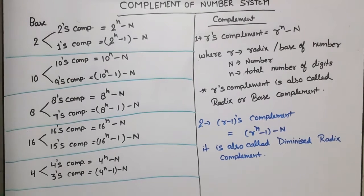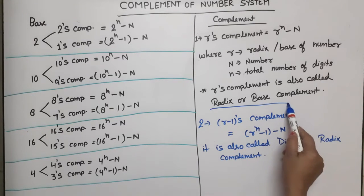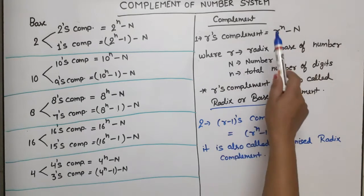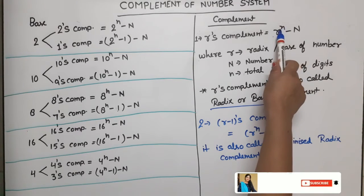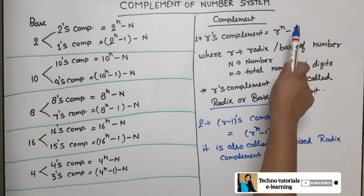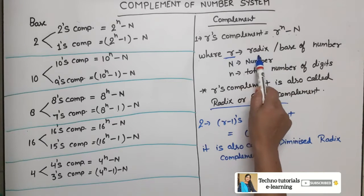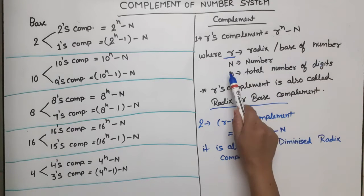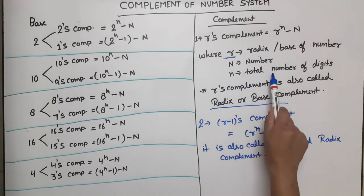Let's start. This is the general formula: what is r's complement? R's complement, which is also called radix or base complement. Its formula is: r raised to power n minus N, where r is the radix or base of the number, N is the number (capital N), and n is the total number of digits.